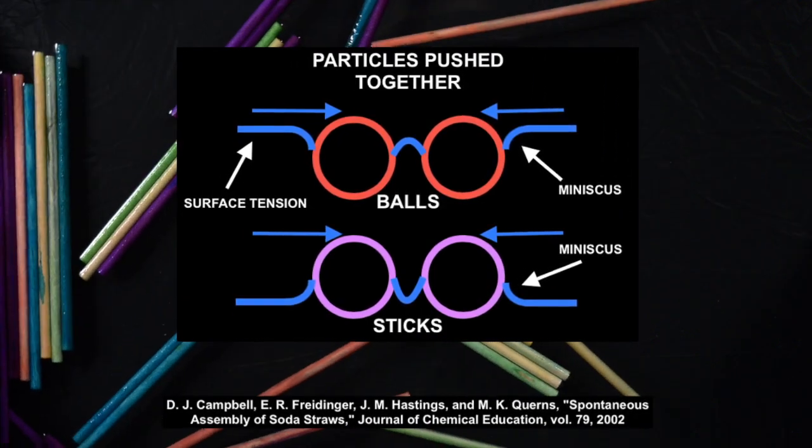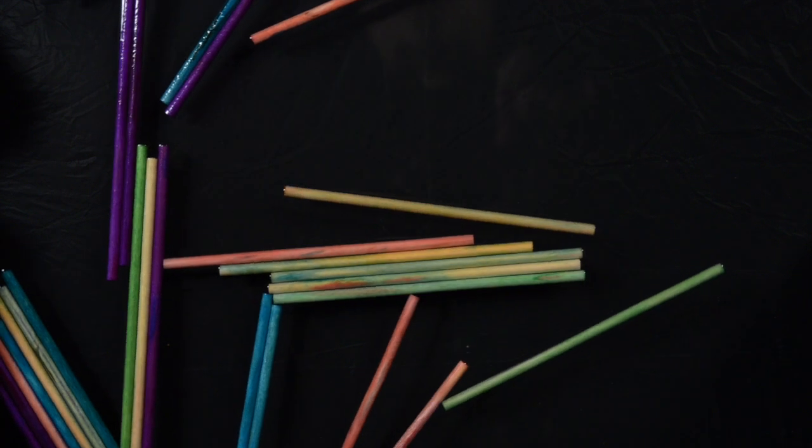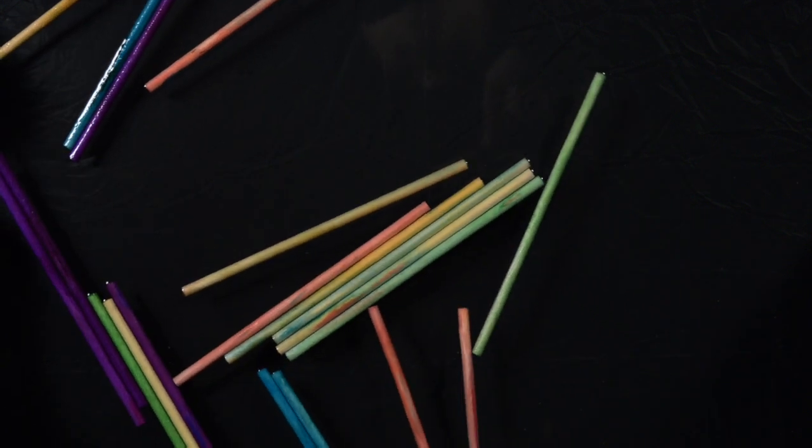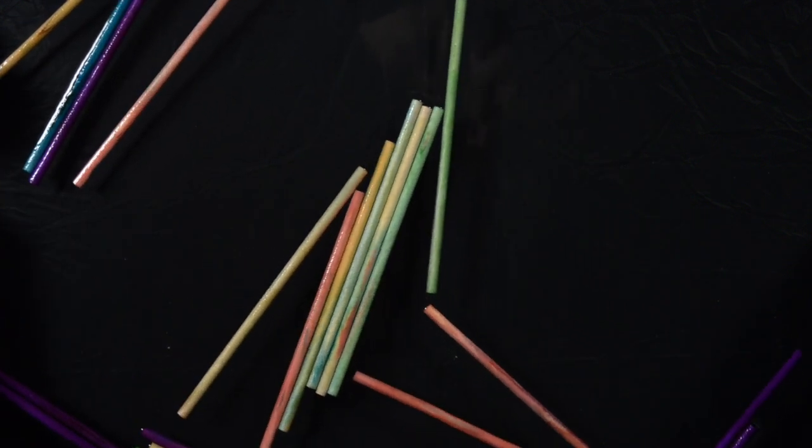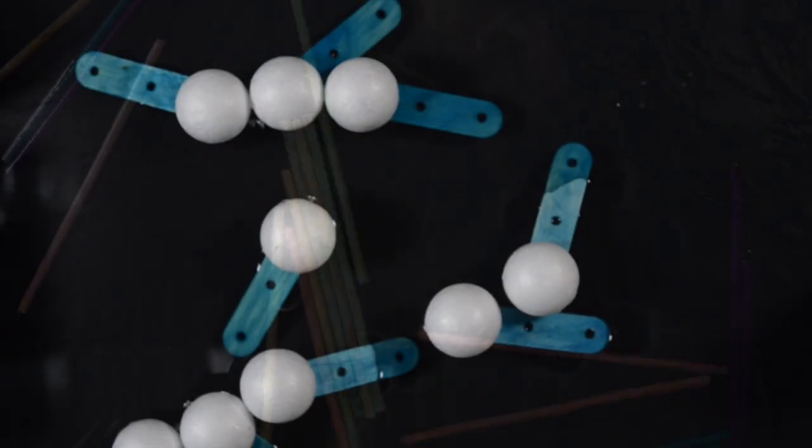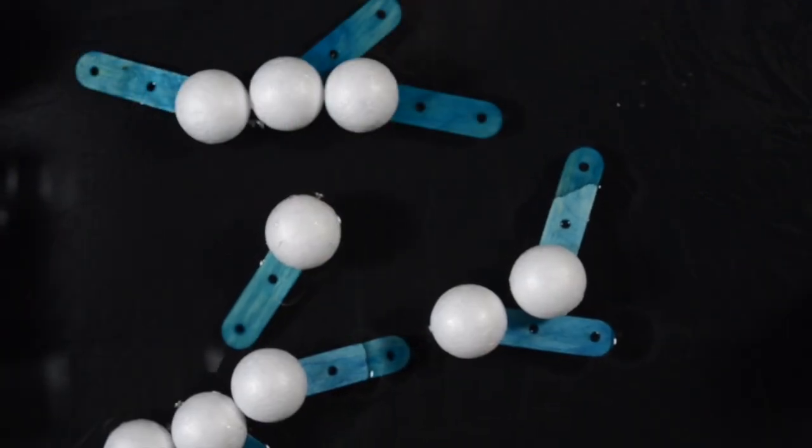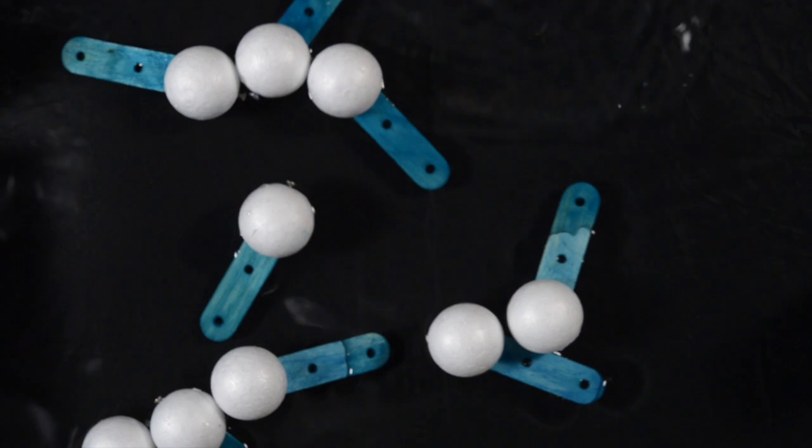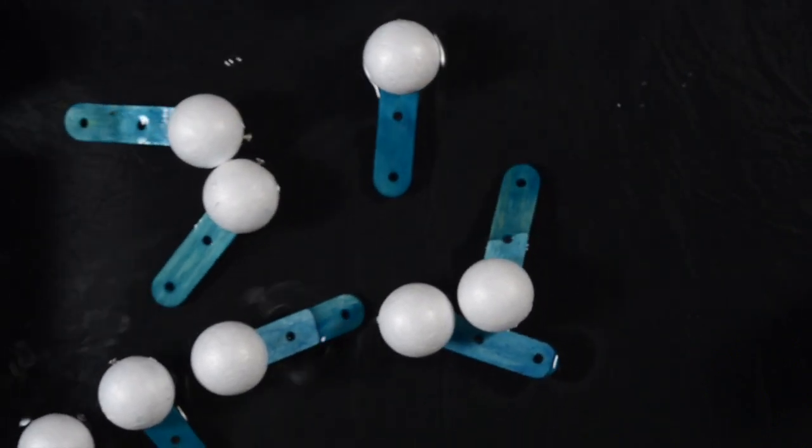These interactions between the water and the particles push the particles into their self-assembled structure and the capillary interactions hold the particles in their assembly. While this is an example of self-assembly on the macroscale, it can also occur on the nanoscale. That's at a size of around one billionth of a metre.